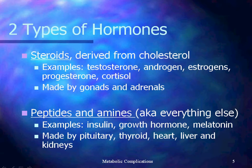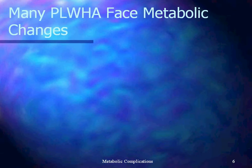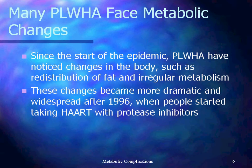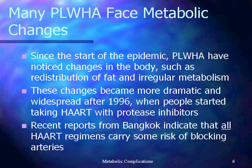Obviously I can't, in this presentation, take you through all of the different things that all of these organs do. Contact me if you need more information about that. We know that a lot of people living with HIV have metabolic changes, and we've noticed that since the start of the epidemic. People living with HIV have noticed changes in the body such as redistribution of fat and irregular metabolism. These changes became more dramatic after 1996, when people started taking highly active antiretroviral therapy with protease inhibitors. Reports from the 2004 AIDS conference indicate that all HAART regimens carry some risk of blocking arteries, which is another metabolic complication.